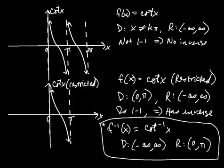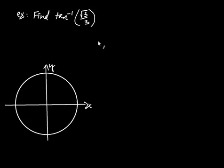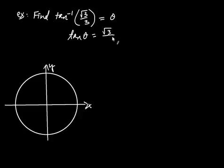Now the question is, how do you go about evaluating these inverse functions? The key thing to remember is mainly their range — that's where the trickiness lies. Let's find inverse tangent of root 3 over 3. We're looking for the output of an inverse tangent function, so the output is some angle theta. This implies that tangent of that angle has got to be root 3 over 3.